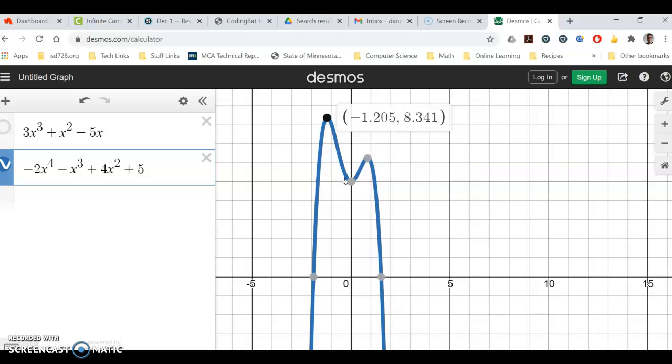And then the relative min actually would be right down here in this little turn. And that looks like it's zero and positive five. Not surprising, there's our Y intercept there. So our min is 0, 5. Max and min. This one has two relative maxes, and this one has one relative min.